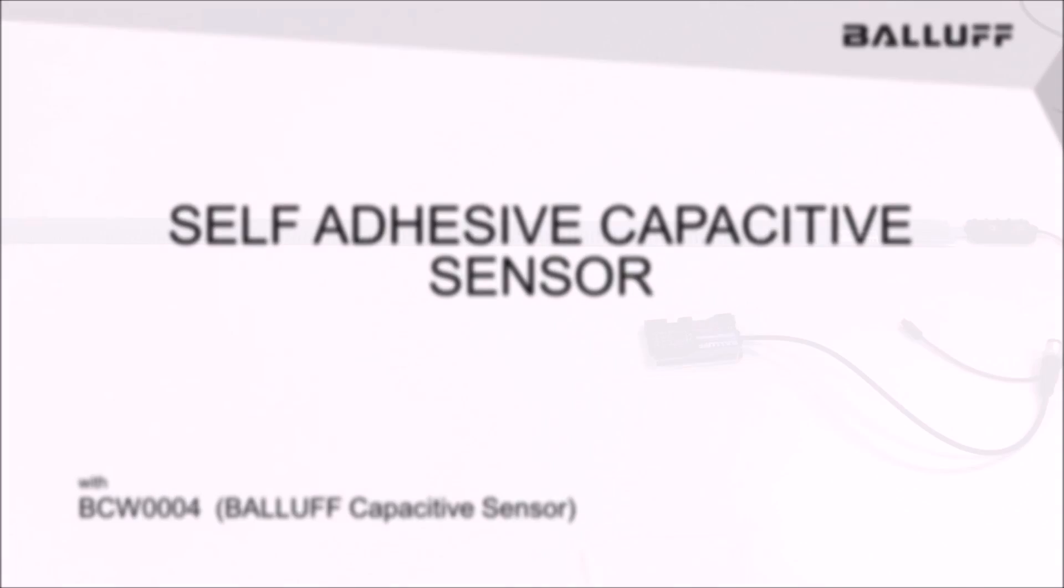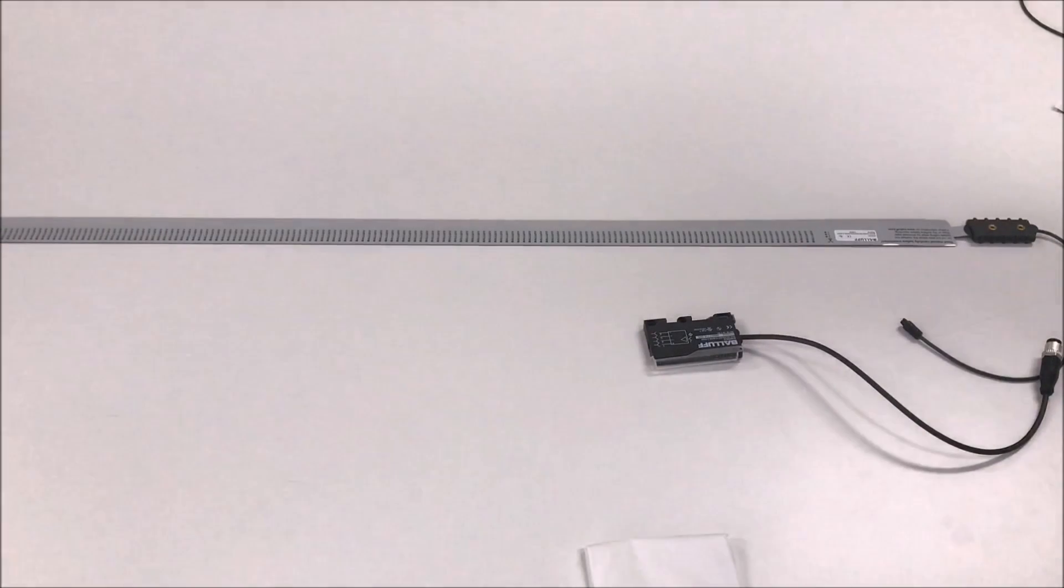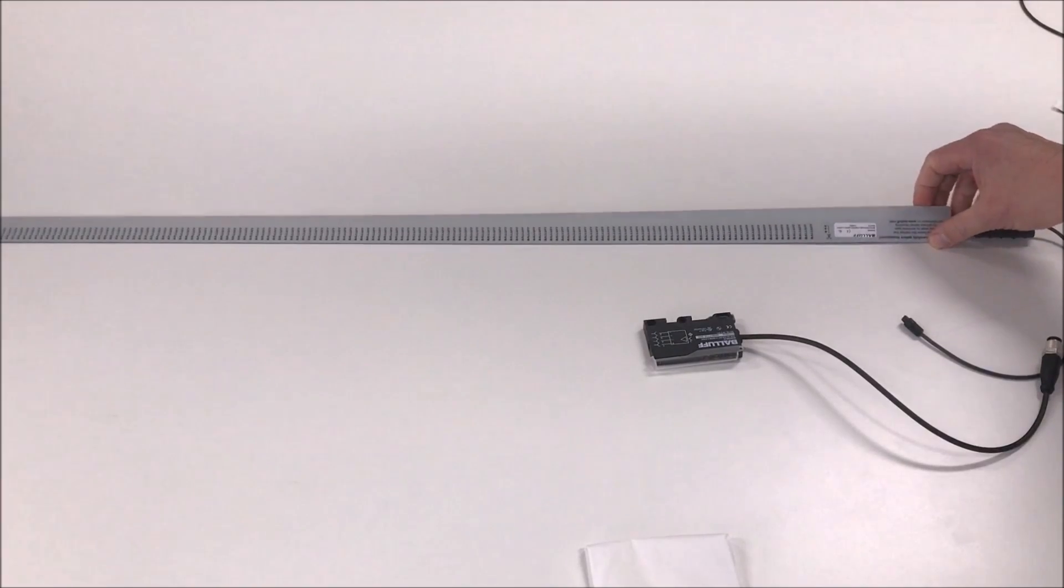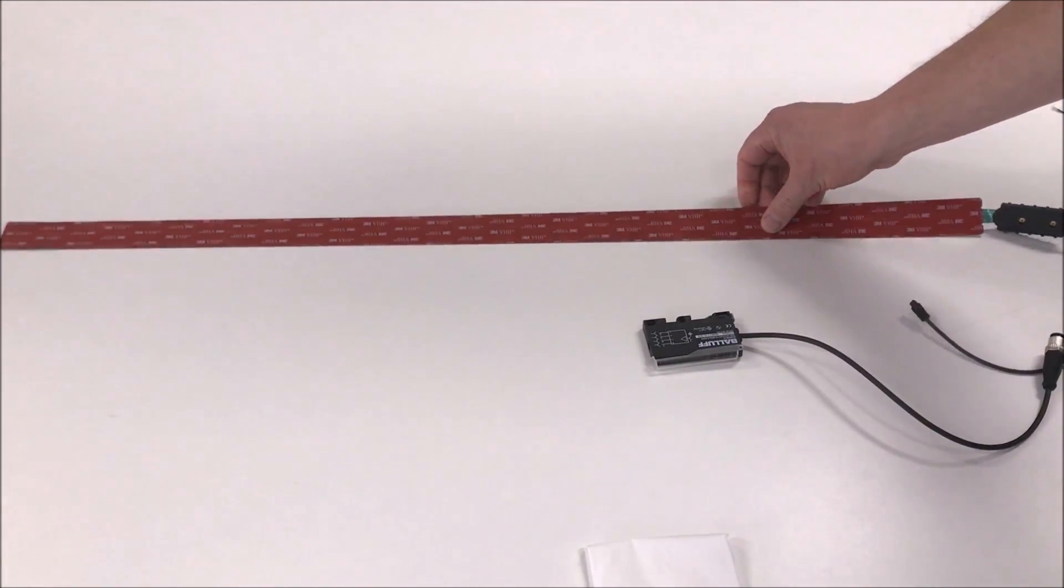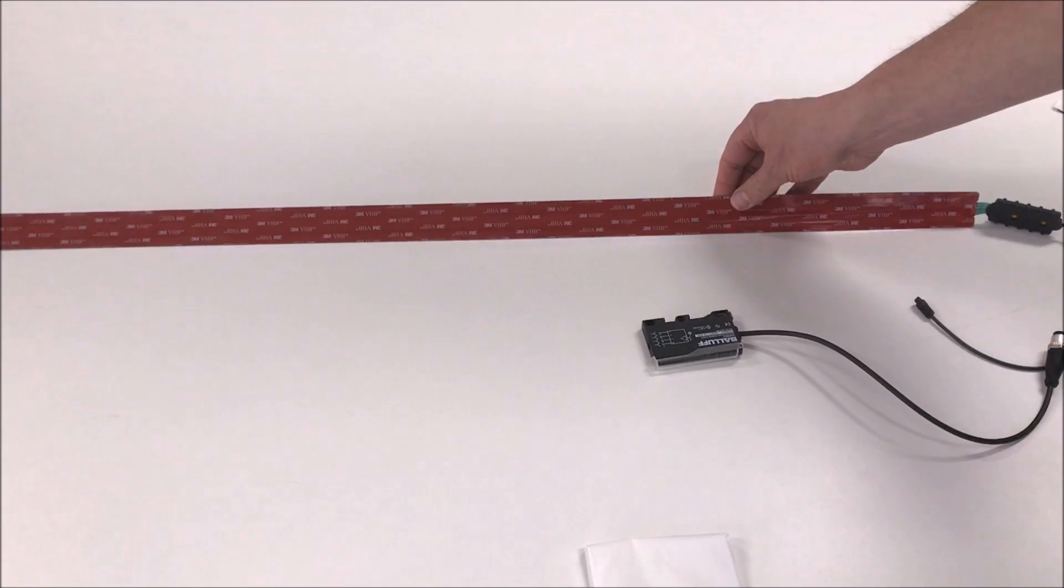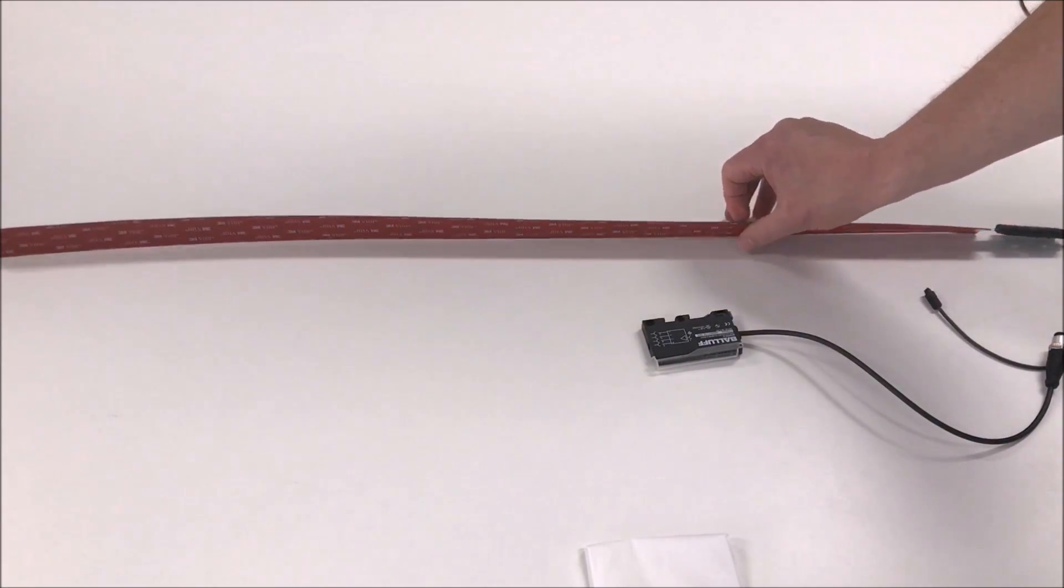This short video is to introduce the new BCW capacitive sensor from Balluff for continuous level measurement. The sensor consists of three components: an 850mm long tape which is flexible and has a self-adhesive reverse side, an amplifier, and an optional extension cable between the sensor and the amplifier.